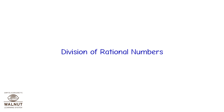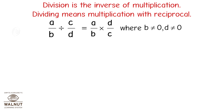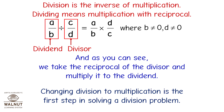Division of rational numbers. Division is the inverse of multiplication — dividing means multiplication with a reciprocal. So a/b ÷ c/d = a/b × d/c, where b ≠ 0 and d ≠ 0. We take the reciprocal of the divisor and multiply it to the dividend. Changing division to multiplication is the first step in solving a division problem.